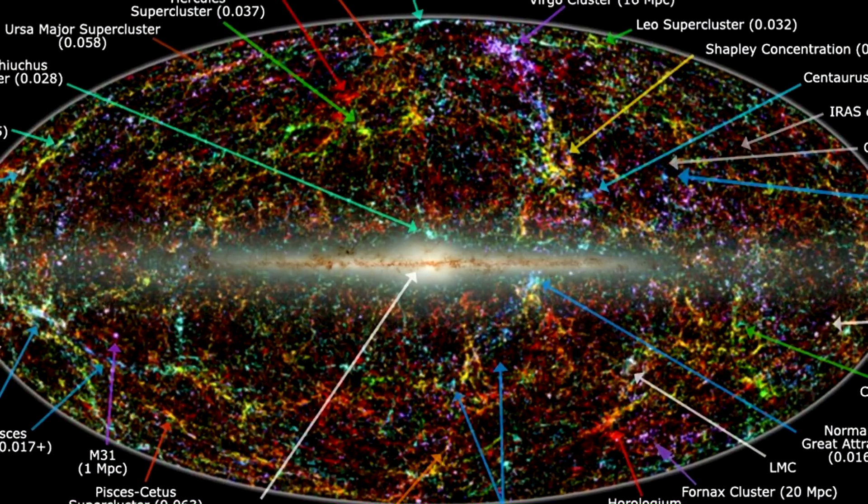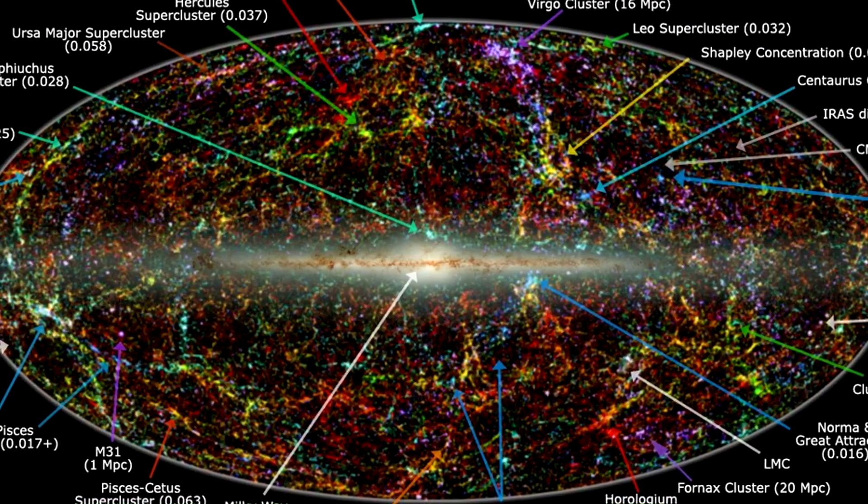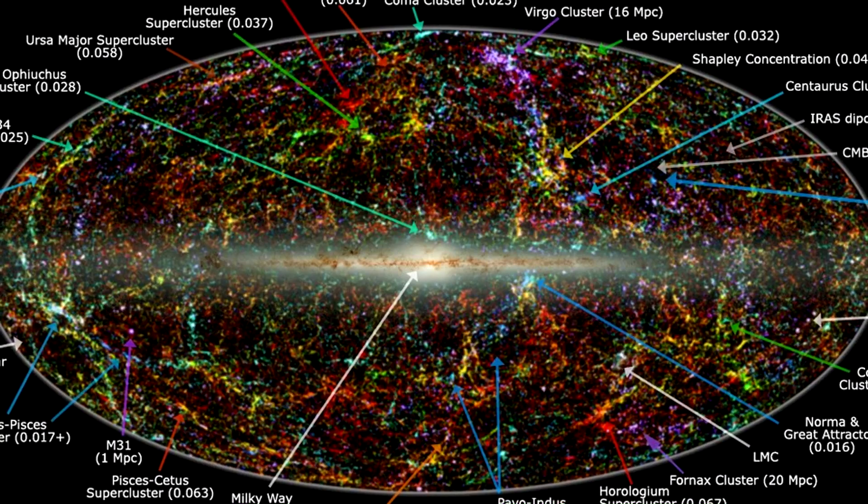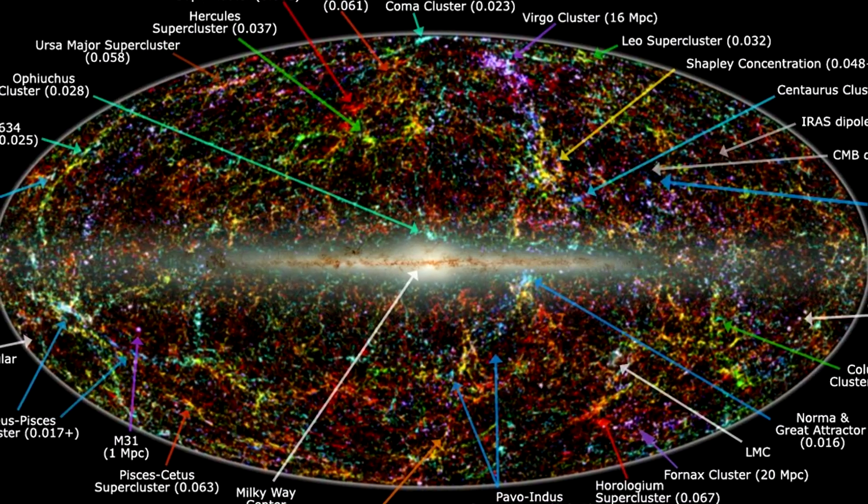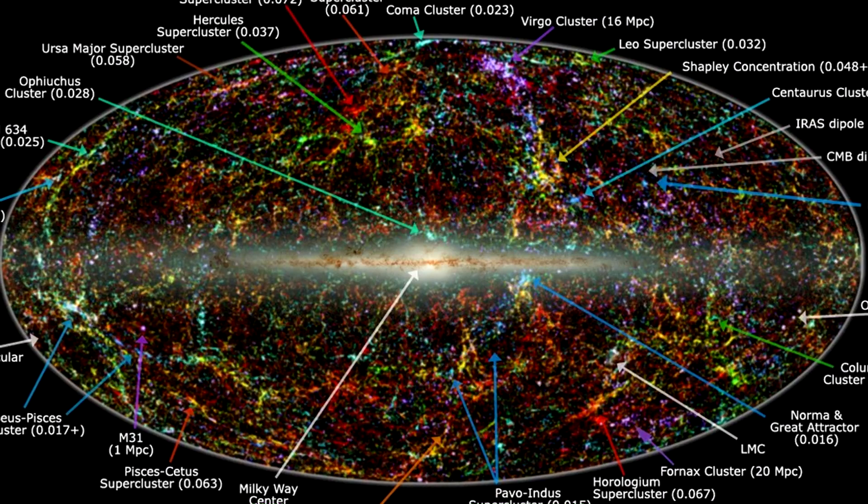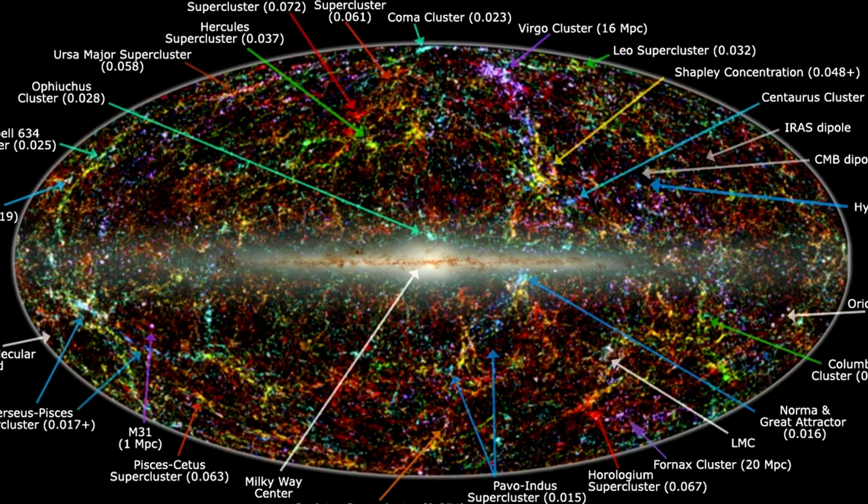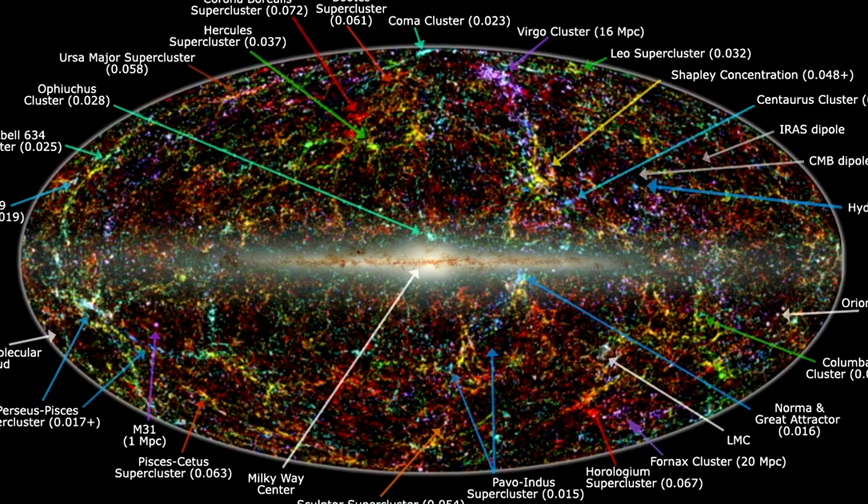One of the most intriguing aspects of the Great Attractor is its relationship with the Cosmic Microwave Background Radiation. The CMB is a faint glow of light that permeates the entire universe and is believed to be the afterglow of the Big Bang. The Great Attractor seems to be disturbing the CMB in a way that suggests that it is much larger than previously thought.